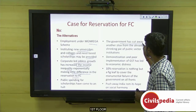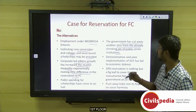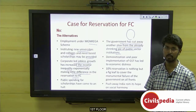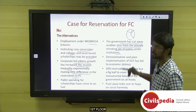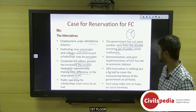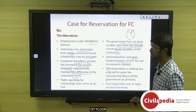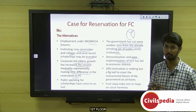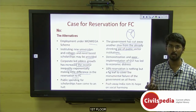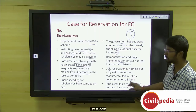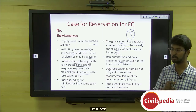The author argues the government has cut another slice of an already shrinking pie of public sector institutions — there is already a 49% reservation cap, and adding 10% for forward castes brings it to 59%. He also criticizes demonetization and poor GST implementation as the worst failures of this government, calling the 10% reservation a fig leaf to cover all these failures.